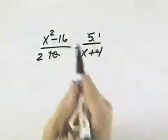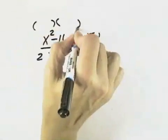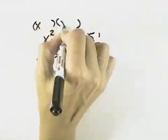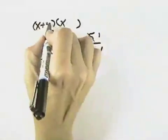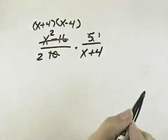But before we can look to cancel from the other numerator and denominator, we need to see if they will factor. And this first numerator is a difference of squares, so that means we can factor it as the sum and difference of the square roots to factor it into x plus 4 times x minus 4.